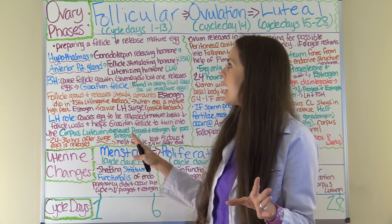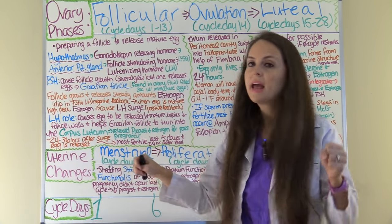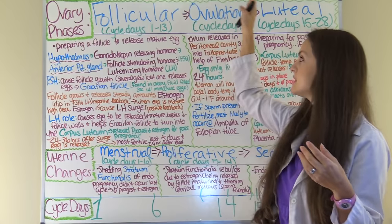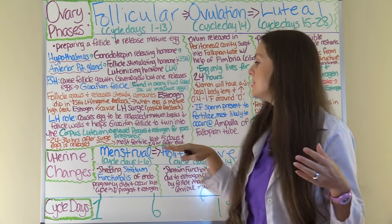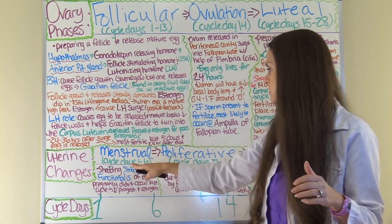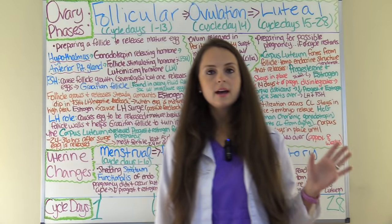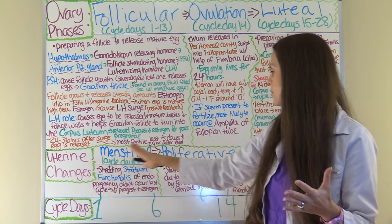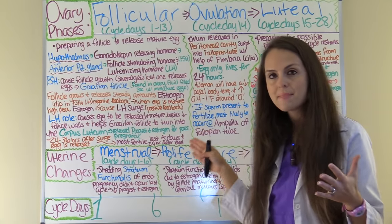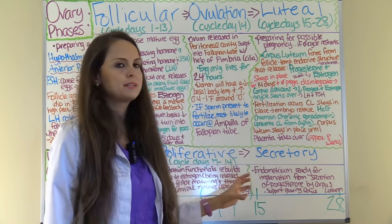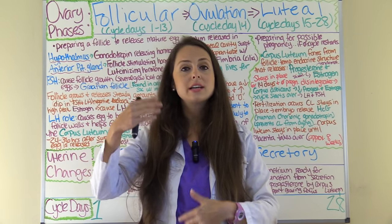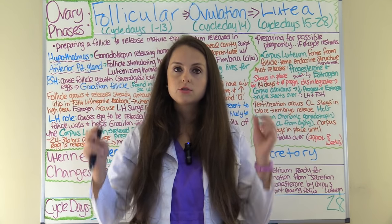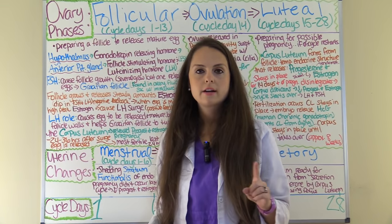You will have ovary changes and changes in the uterus. Each stage has three phases. The ovary will have three phases: the follicular, ovulation, and luteal. The uterine cycle will also have three phases: the menstrual, the proliferative, and the secretory. Some of these phases overlap — the follicular overlaps with the menstrual and proliferative, and then the luteal and secretory overlap together. The changes in the ovaries are actually helping the uterus get prepared for the potential baby.